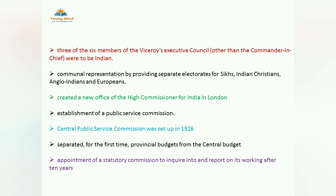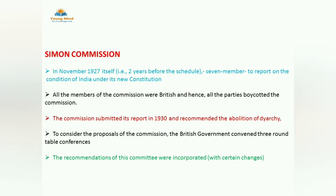So next, the Simon Commission arrived in India. As per schedule it had to come in 1929, but it came in November 1927 itself — two years before schedule. It was appointed to check the condition of India under its new constitution.